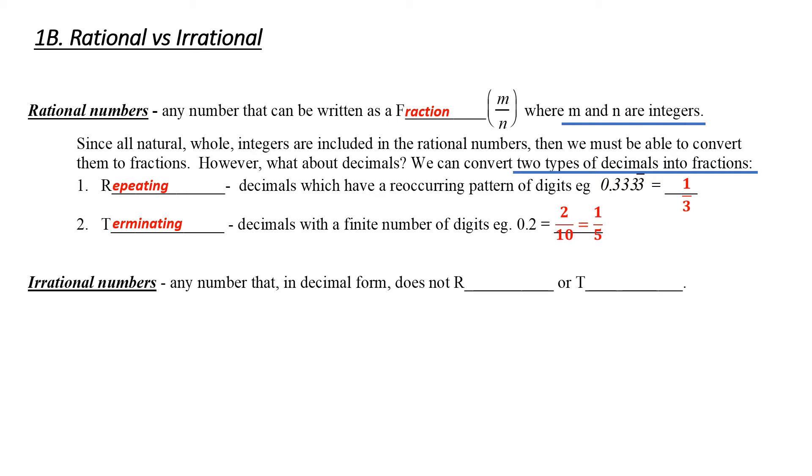So what are irrational numbers? Well, an irrational number is a decimal that does not repeat and does not terminate. Example, square root of 3 or pi. Either of these, when you punch into your calculator, does not appear to repeat or terminate.